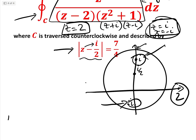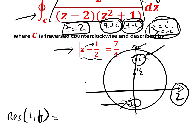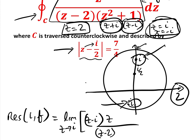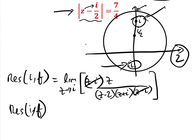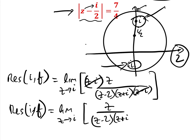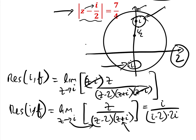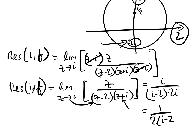The pole at z = i is of order 1, so we use the simple residue formula: Res(i, f) = limit as z→i of (z − i) × z / [(z − 2)(z + i)(z − i)]. The (z − i) cancels, leaving the limit as z→i of z / [(z − 2)(z + i)]. Substituting z = i gives i / [(i − 2)(2i)] = 1/(2i − 2) = 1/(2(i − 1)).